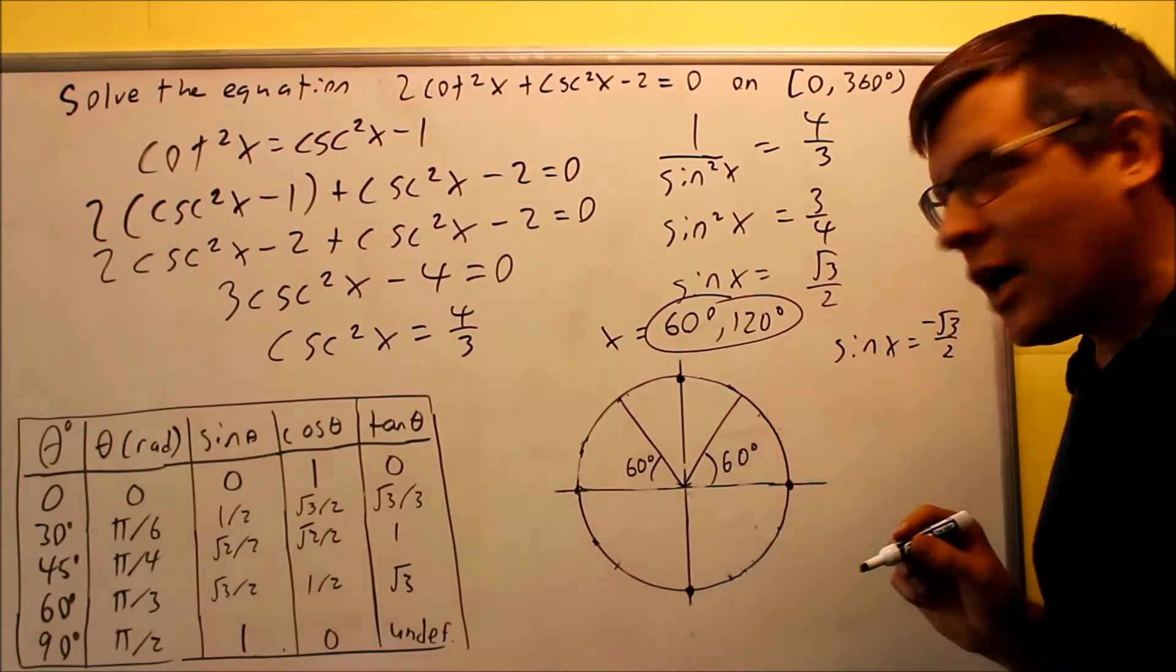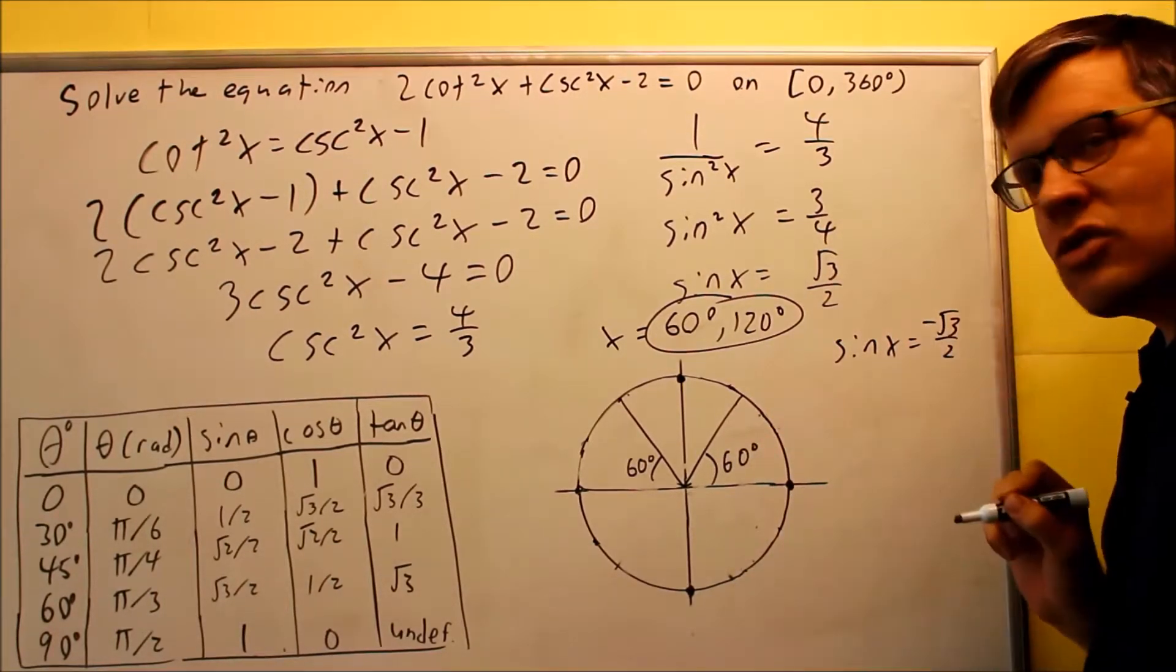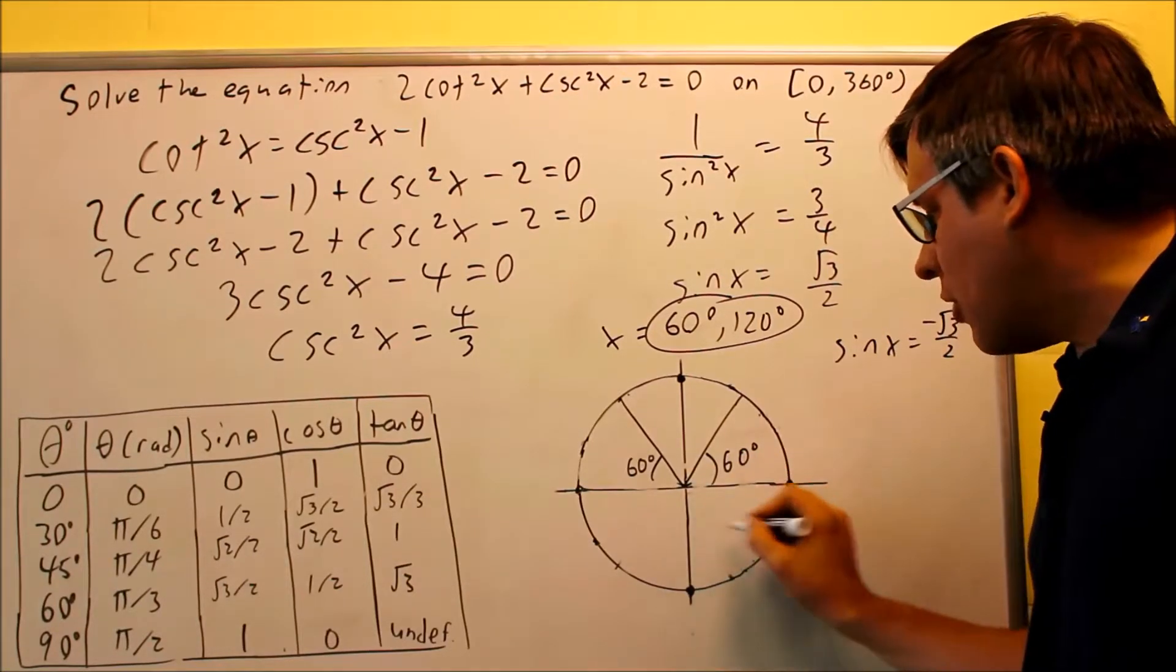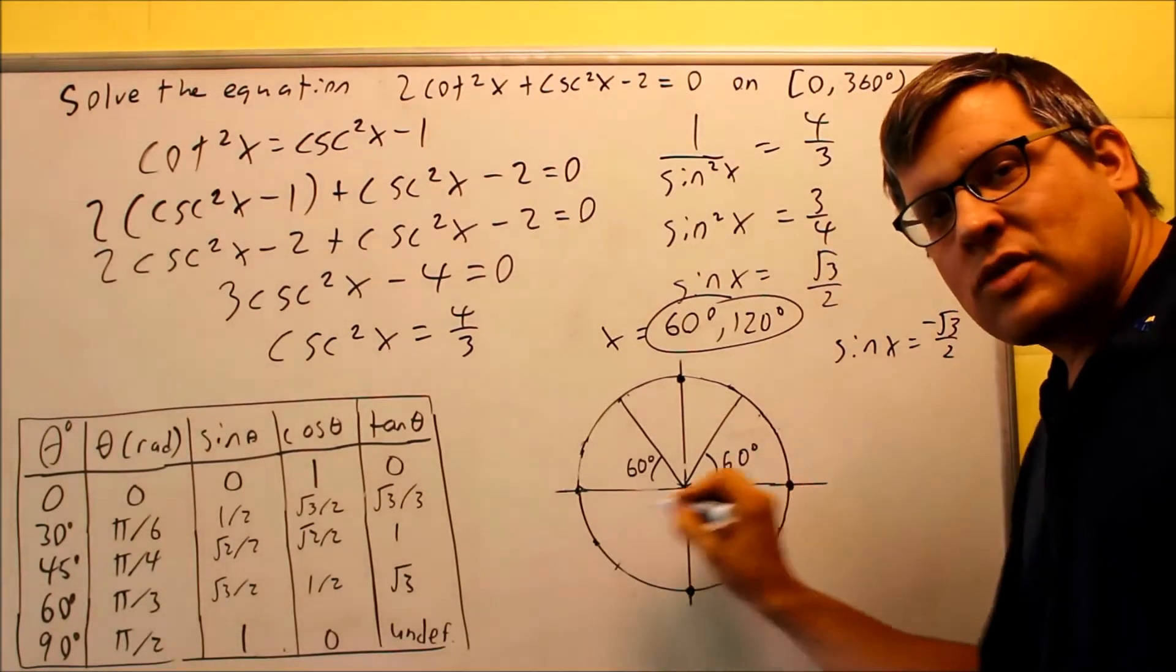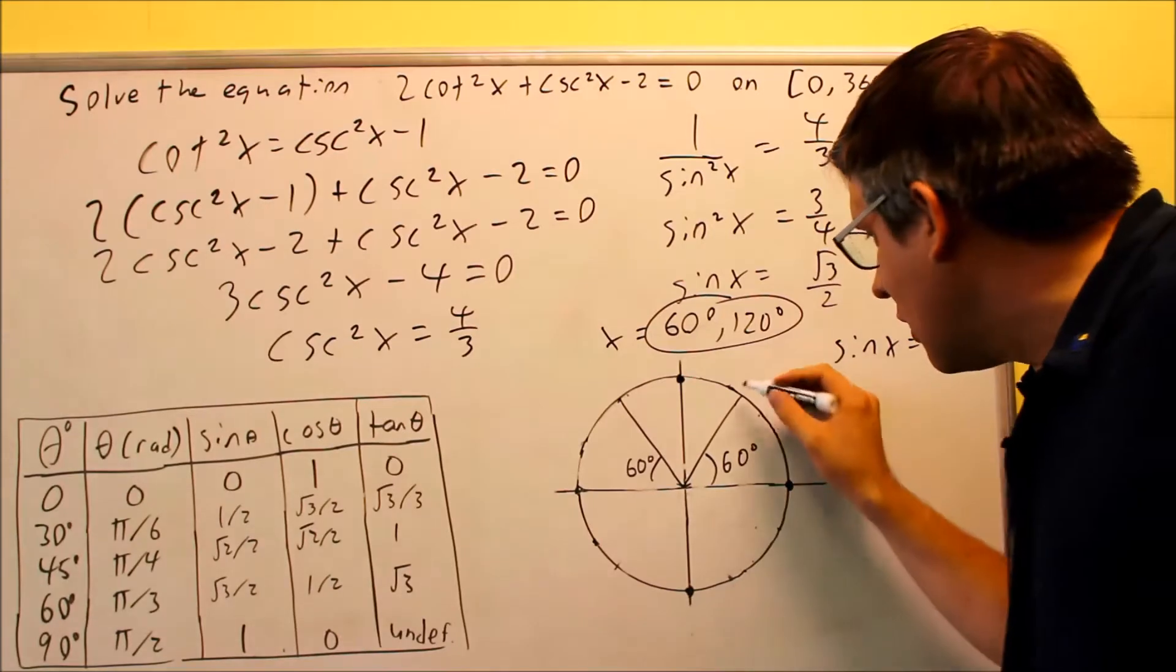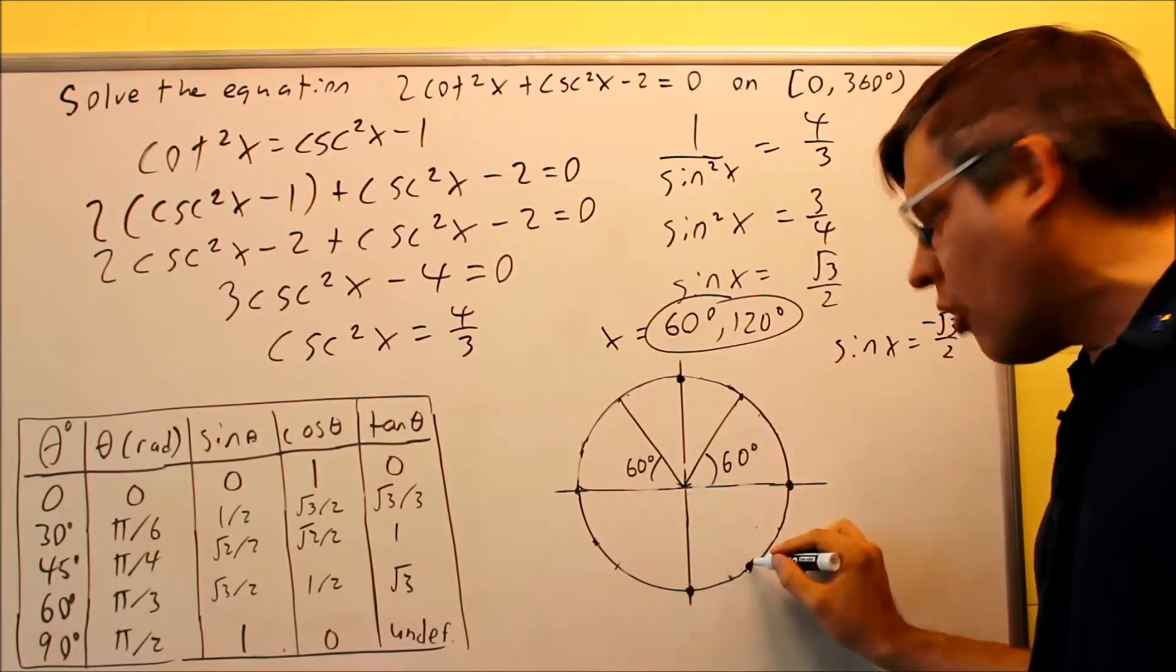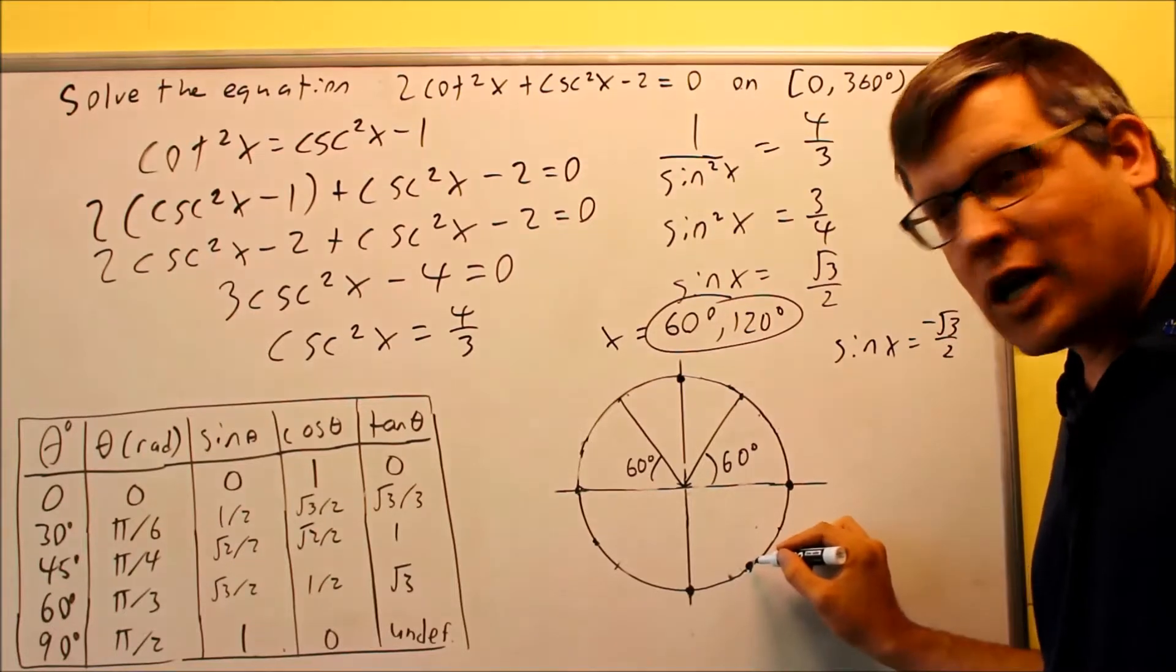Now that we've taken care of that now we need to look at negative square root of 3 over 2. Negative square root of 3 over 2 is going to happen in these two quadrants down here because that's the quadrants where sine is going to be negative in. If I have a y value here that means if I go right directly below it I'll have the same y value only negative down below.